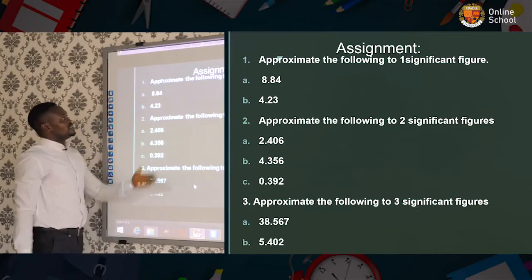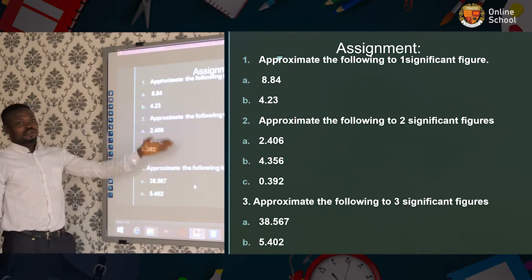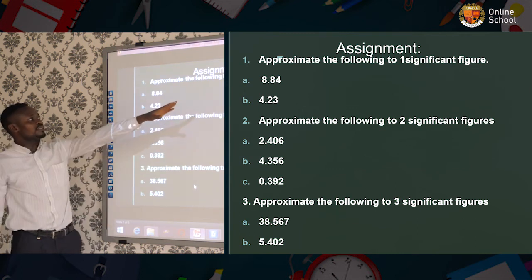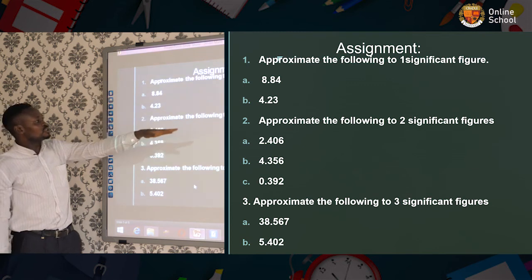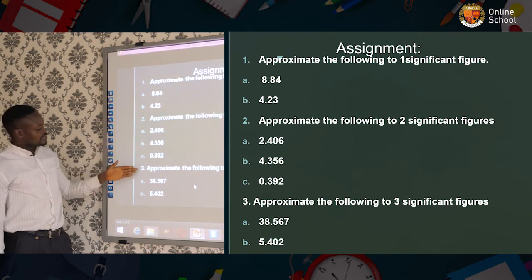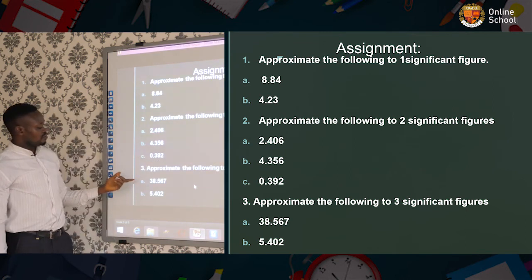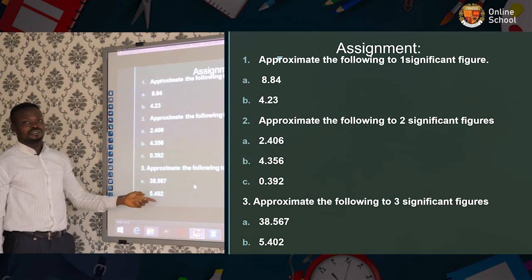Now this is your homework. Number one: approximate the following to one significant figure — that is (a) and (b). Number two: approximate the following to two significant figures — you have (a), (b), and (c). Number three: approximate the following to three significant figures — which are 38.567 and 5.402. See you in our next class. Thank you.